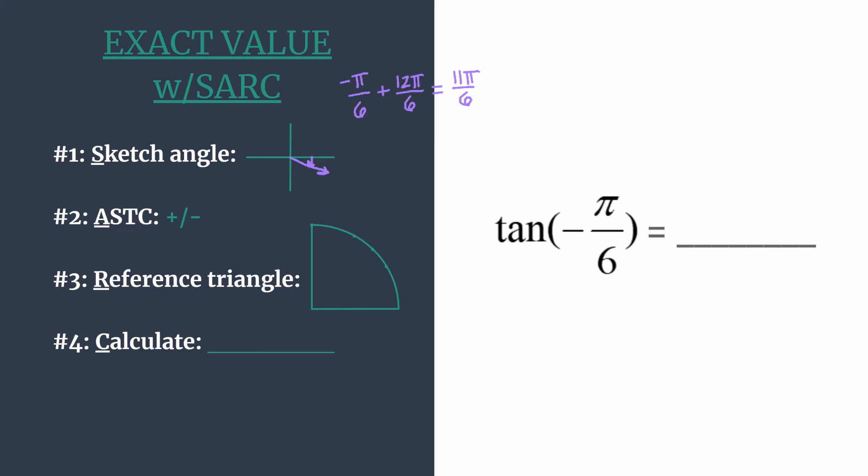We have our terminal side sketched, and now we move to step 2, using ASTC to decide if our exact value should be positive or negative. The acronym ASTC is ALL STUDENTS TAKE CLASSES, working from quadrant 1. These letters remind us which trig functions and their reciprocals will be positive in each quadrant.